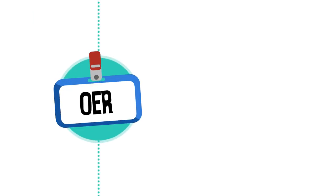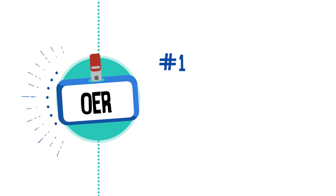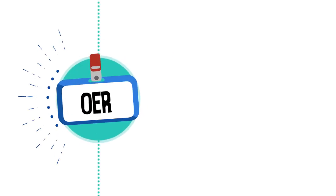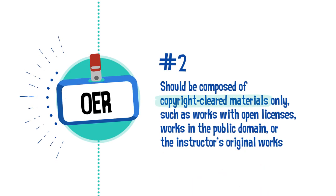Let's review some key ideas of OER labeling. Number one: to be labeled as OER, the course should use open educational resources as the required instructional materials, allowing their free use, repurposing, and sharing. Number two: the course materials should be composed of copyright-cleared materials only, such as works with open licenses, works in the public domain, works with permission from the copyright owner, or the faculty member's original works.